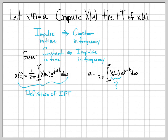Based on what we just worked, we have a good guess — we think x of omega is going to be some type of impulse in the frequency domain. So we replace x of omega with our guess: 2 pi a delta of omega. I've rewritten the integral as 1 over 2 pi, from minus infinity to infinity, with x of omega replaced by 2 pi a delta of omega. The constants 2 pi a are chosen to make the integral work out correctly, as we'll see in a moment.